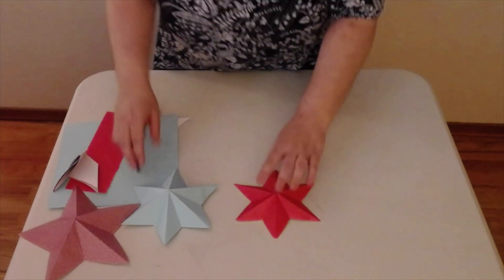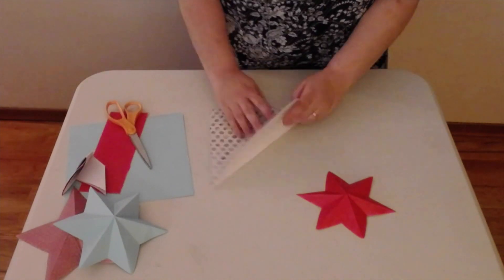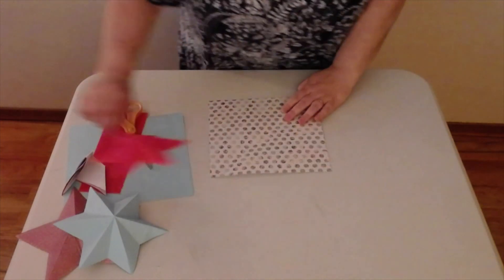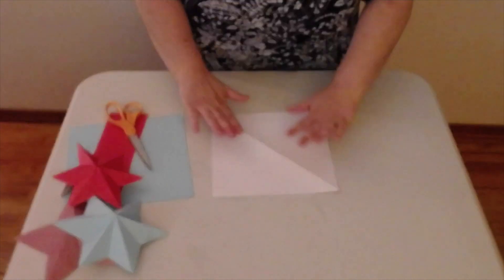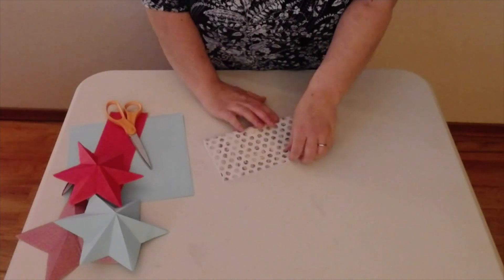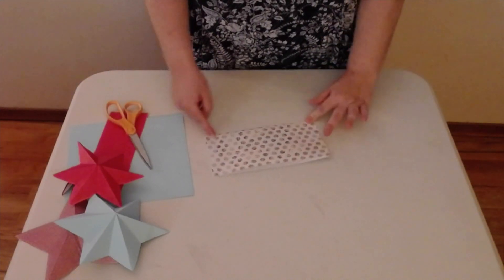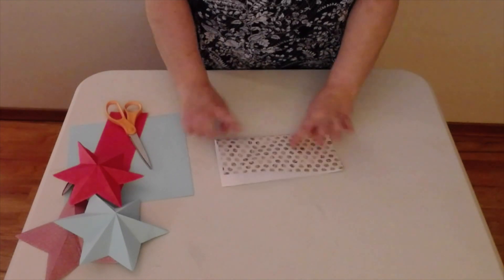Now for our five pointed stars we're going to again have a square sheet of paper and I had cut this one earlier. Except this time we're going to fold it into a rectangle. So I'm going to take my solid white piece up. If you have colors on the back that's fine. So you want to start with the colored side flat white side up. Fold it in half.